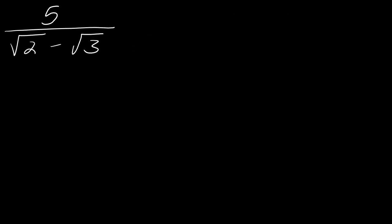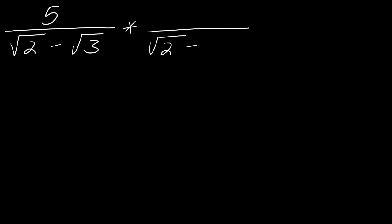So why this matters is, if I'm trying to rationalize a denominator that has two square roots, what you're going to do is multiply by the conjugate. So the conjugate is going to be square root of 2 plus square root of 3. And as we know, whatever I multiply by the bottom, I have to multiply by the top.